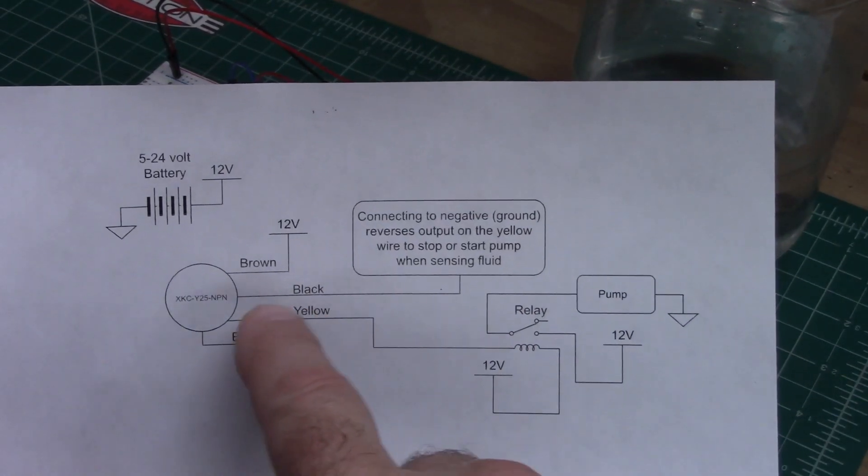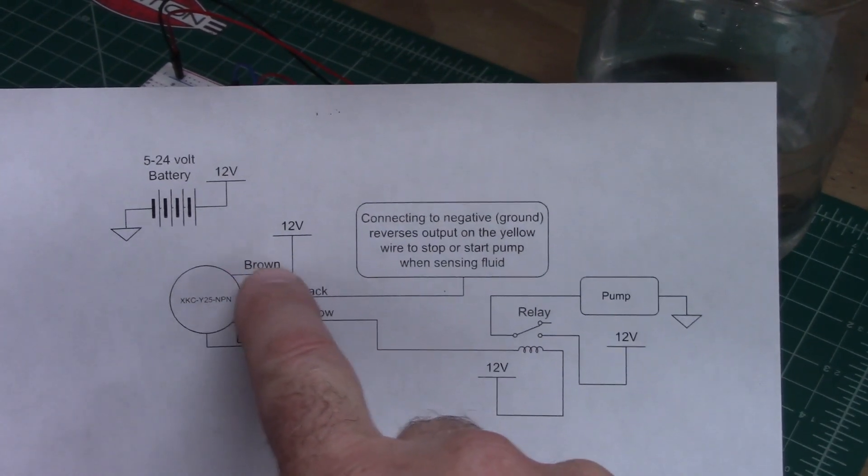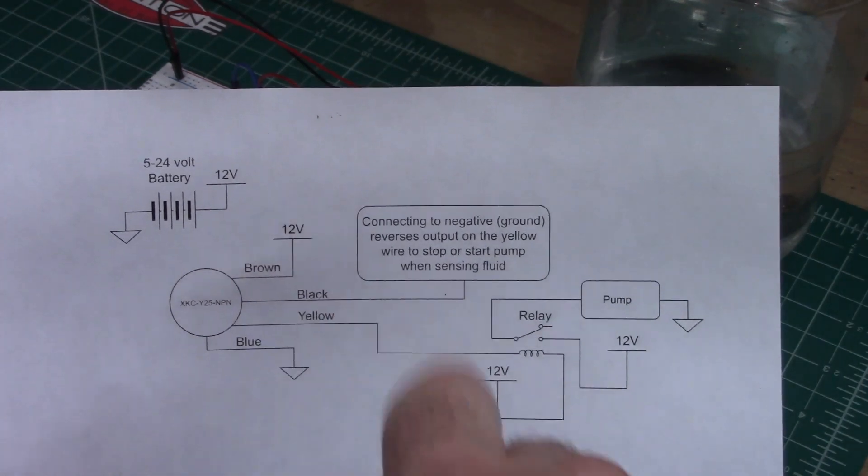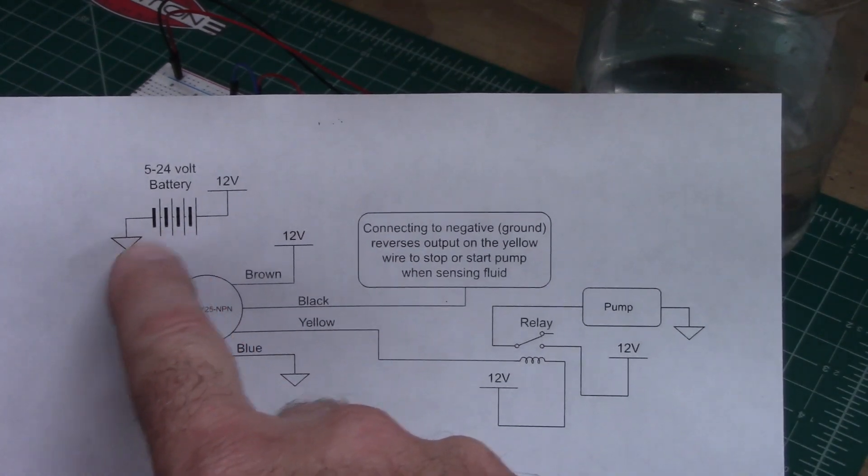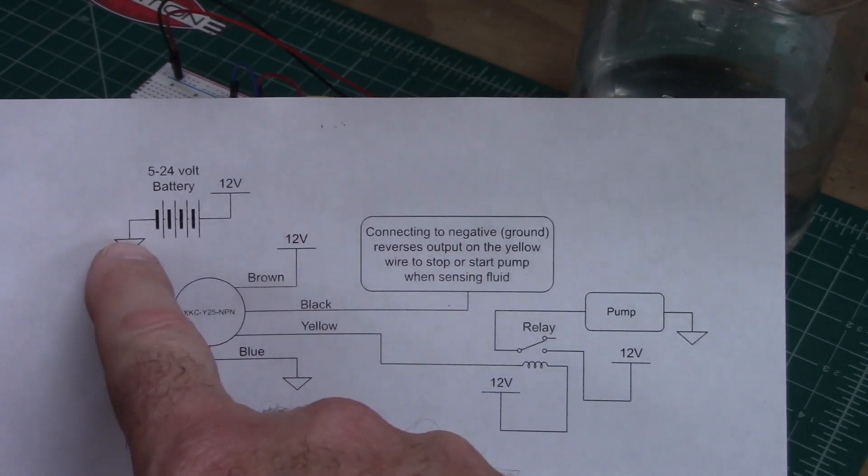Here's just showing it to you in the schematic. So you attach the brown, or it might be red, to 12 volts. The blue goes to ground, which is your battery, so it attaches where that triangle does, those attached together.